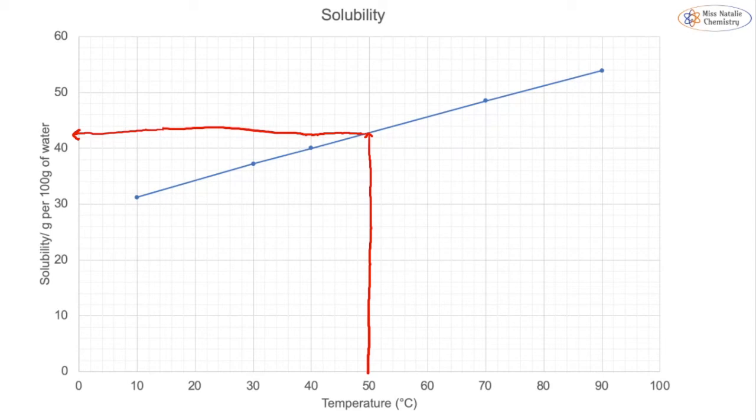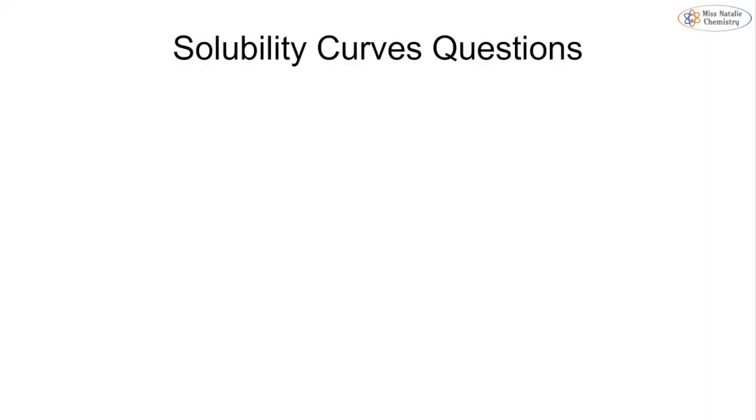Then I draw a line going from there across to my y-axis. Of course you are going to have a ruler when you do yours and yours is going to look much better, but you can see roughly that we get an answer. Our answer is at 50 degrees my solubility is 42.5 grams per 100 grams of water. Depending on how you've drawn your line of best fit you may be slightly different, but it should be in and around that area.